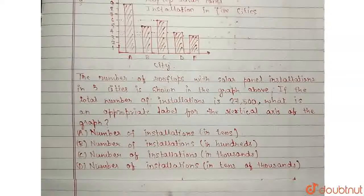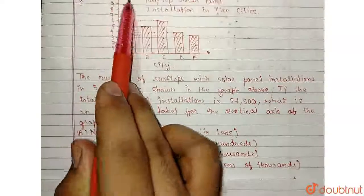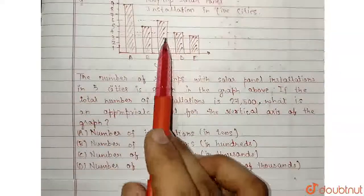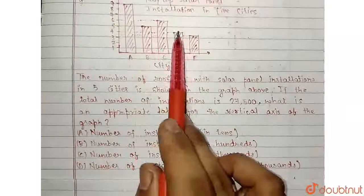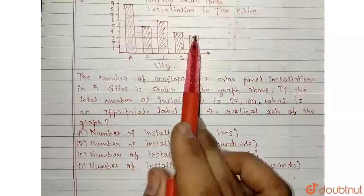Okay, so for that, I will just add the values. The first one is 9, second one is 5, third one is 6, fourth one is 4, and fifth one is 3.5.